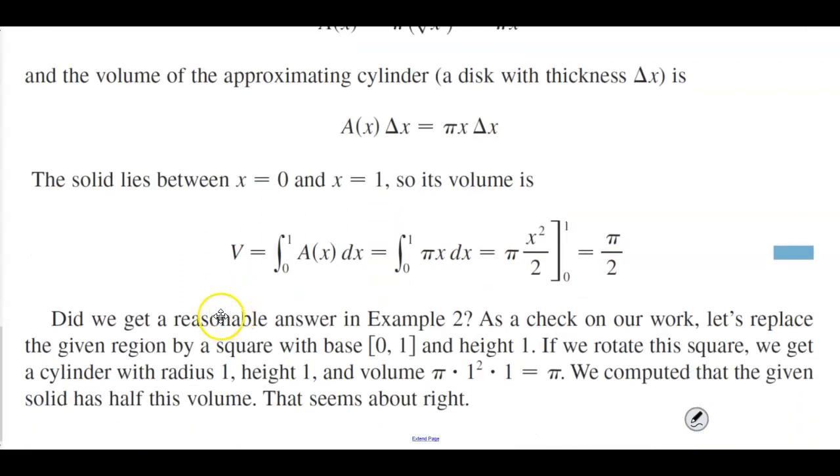Now the question is, did we get a reasonable answer in example 2? As a check on our work, if we replace the given region by a square with base 0 to 1 and height 1, and rotate the square, we would get a cylinder with radius 1, height 1, and volume π(1²)(1) which equals π. We computed that the given solid has half this volume because half of π would be π/2. So therefore that seems about right.